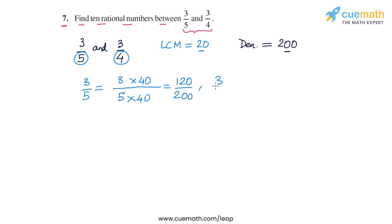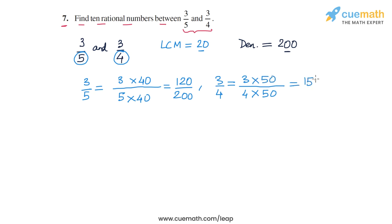Similarly, to convert 3/4 to a rational number with denominator 200, we multiply 4 by 50, and 3 by 50 as well, giving us 150/200. So we have rewritten the original rational numbers as 120/200 and 150/200.